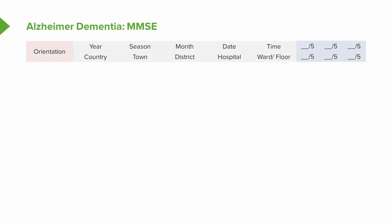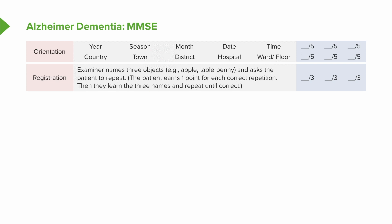Looking more specifically at the MMSE, we test each of the important domains of cognitive function. The first is orientation — we look at year, month, date, as well as location, scored out of a total of five. Next is registration, asking the patient to remember three items and immediately report them back. Patients with advanced dementia can still register items, and it's important to evaluate registration before we test recall.